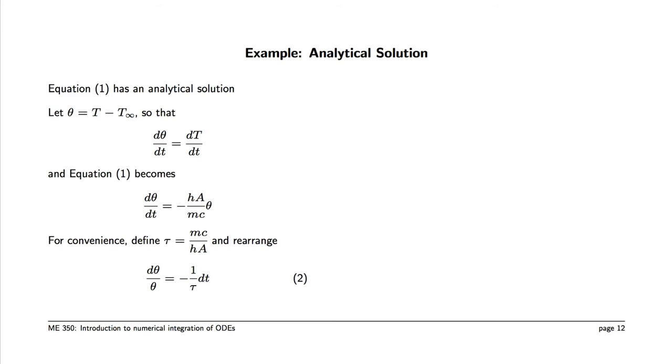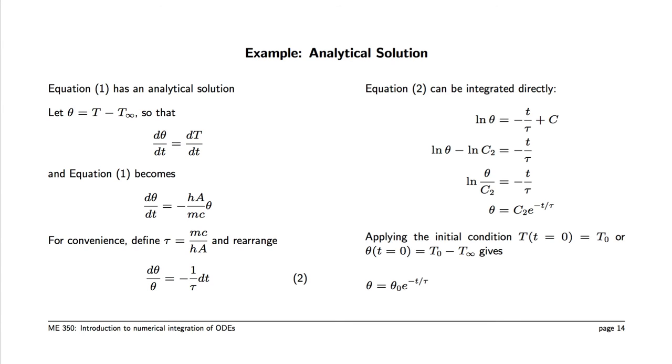We get a time constant, which is mc over ha, and we can separate variables: d theta over theta equals minus 1 over the time constant times dt. Fairly straightforwardly, we can integrate this equation, substitute our initial condition, and we get an exponential decay of the temperature of the initial temperature difference, theta naught.